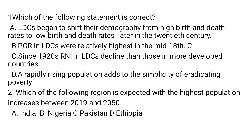The correct statement is A. B is not correct because population growth rate in least developed countries were relatively modest, not highest, in the mid-18th century. C is not correct because in the 1920s, the rate of natural increase in least developed countries did not decline — it rose more than those in more developed countries, and even in the 1930s it exceeded those in more developed countries. D is not correct — a rapidly rising population adds difficulty, not simplicity, to eradicating poverty.